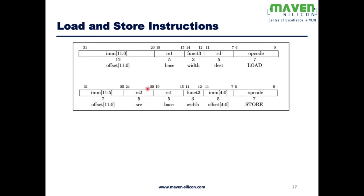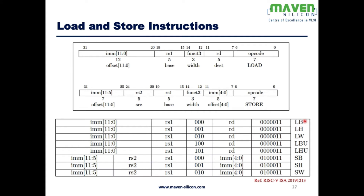The value to be written into memory is available in rs2. funct3 defines the width of the operation — we may want to write a word (32 bits), a halfword (16 bits), or a byte (8 bits). For load instructions, there are different possibilities: load byte, load halfword, load word, load byte unsigned, load halfword unsigned, and store byte — all defined by funct3.